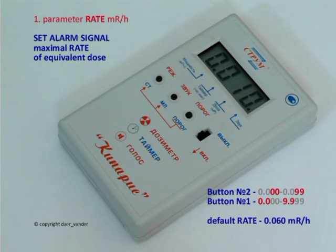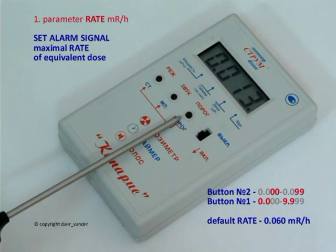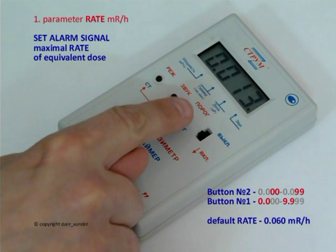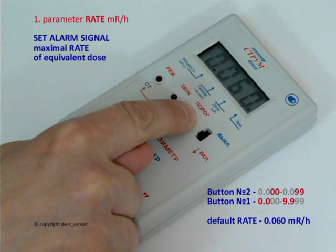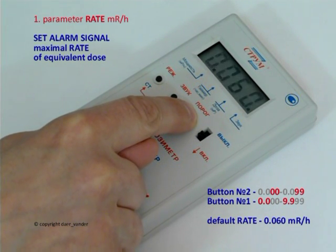The alarm signal will switch on after exceeding the specified threshold of maximum dose rate. You can manually set this maximum value. While pressing and holding button number 3, digits will be blinking on the screen and you will see the value 0.060 Mg per hour, which was installed by the factory as default.